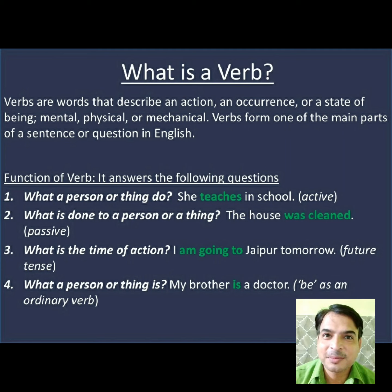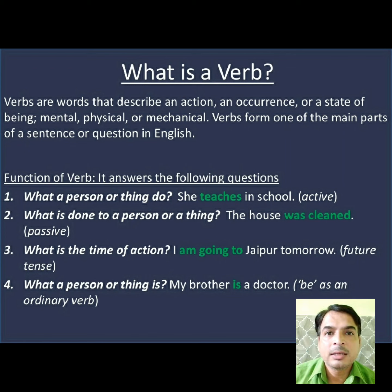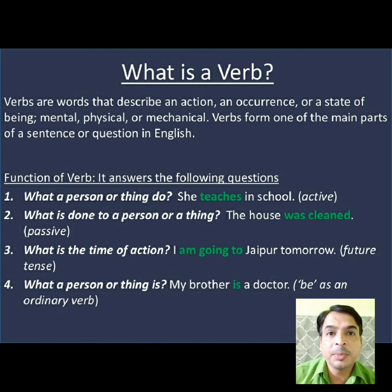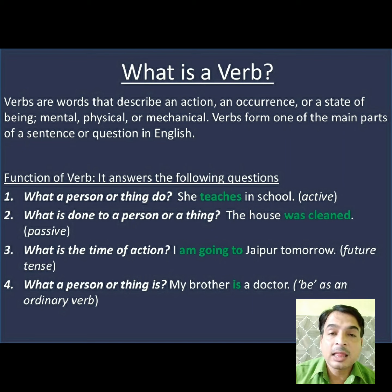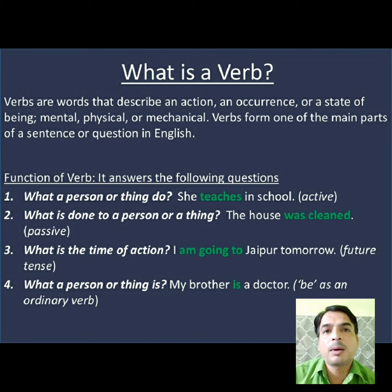The second function of the verb is it tells us what is being done to some person or thing — what is being done to an object. The third and one of the most important functions is that the verb tells us the time of action, whether we are writing or speaking. The verb also tells us what a person is — it tells us about the profession of a person, like 'He is a doctor,' 'I am a teacher,' 'You are a student.'